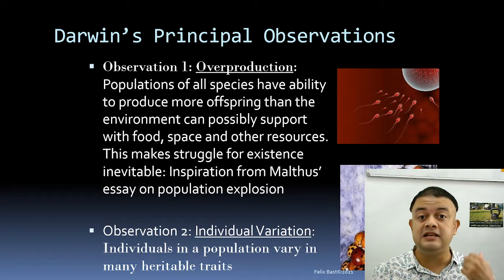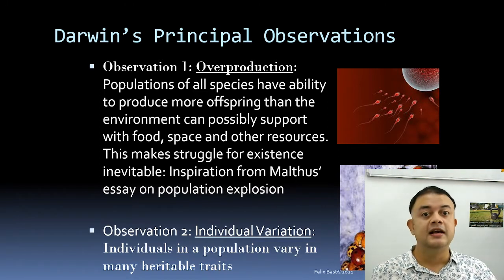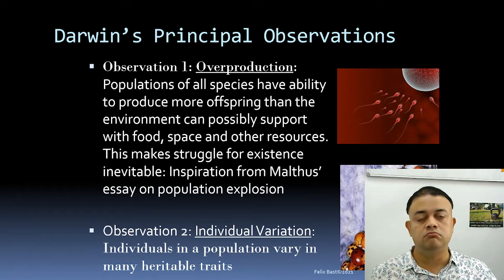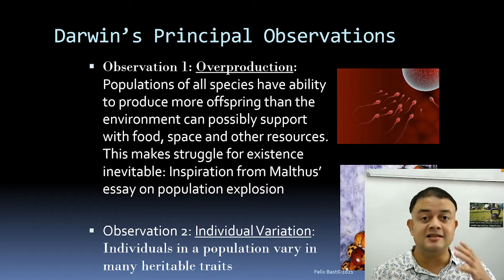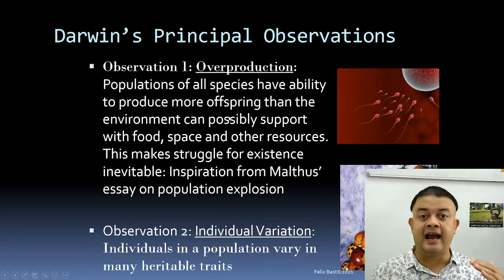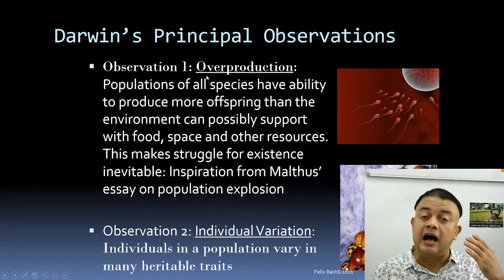After fertilization, only the fittest baby survives. If a baby has chromosomal abnormalities like trisomy, the child might not reach reproductive age and simply perishes. Only the fittest can reach reproductive age to pass on their genome to the next generation. So overproduction is really important and can happen at various levels.